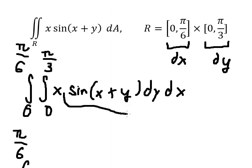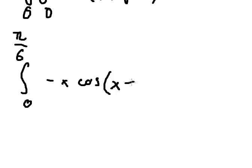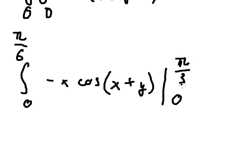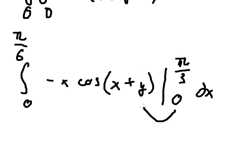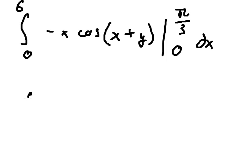That is in here, so we have negative x cosine of x plus y, and we put the bounds from 0 to π/3. I will put π/3 go to y and number 0 go to y.